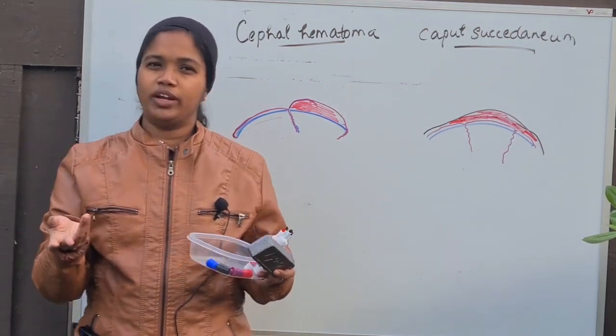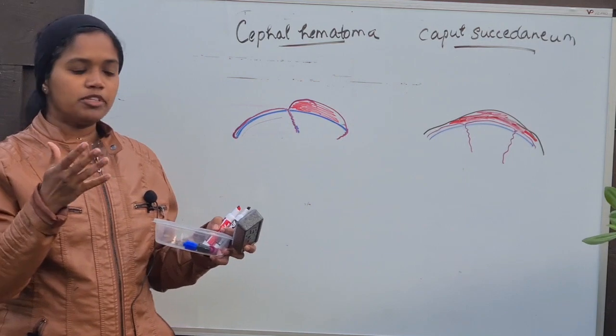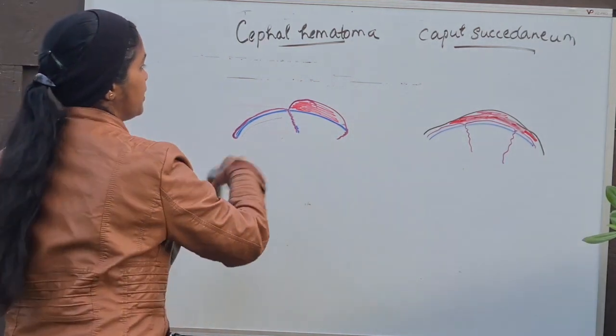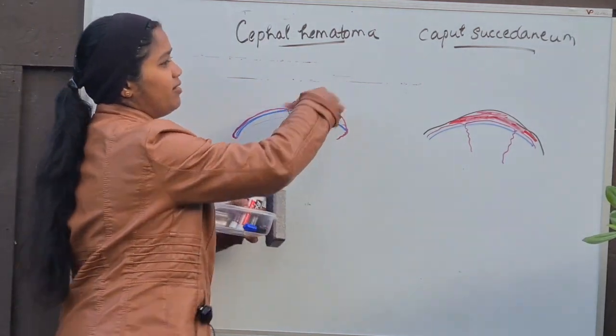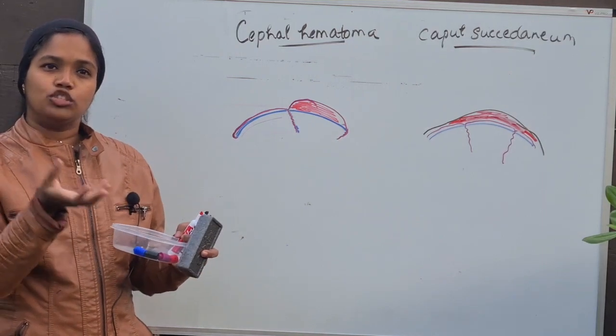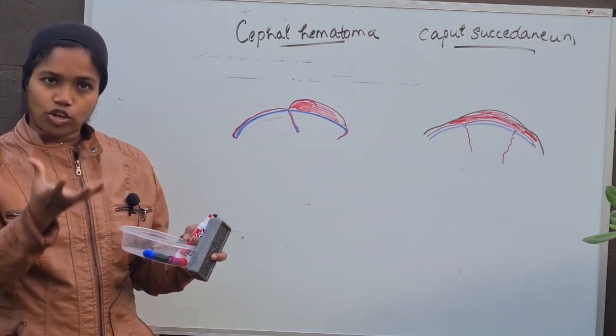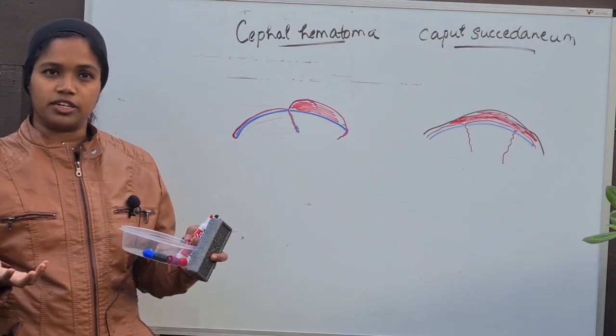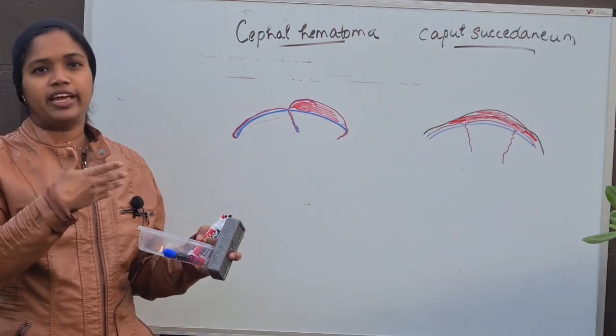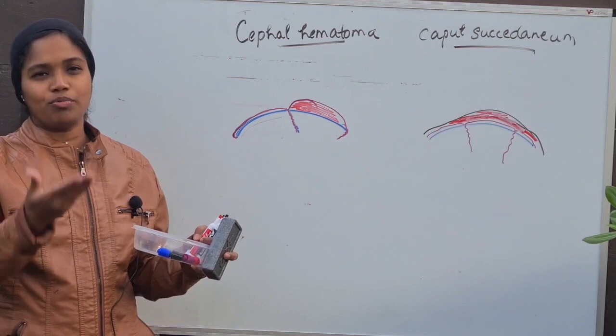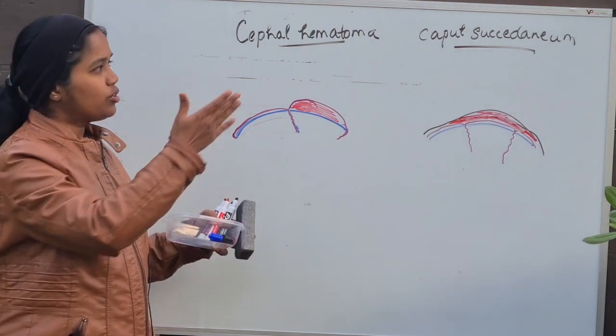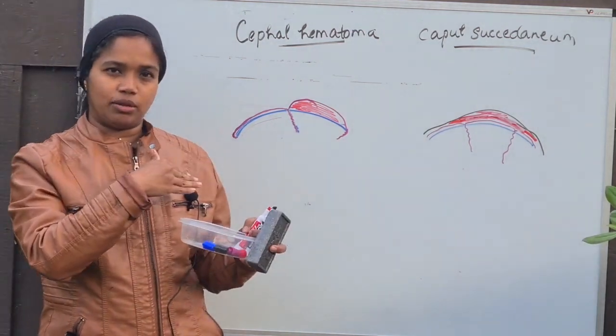Why does this happen? This happens because of instrumental delivery. Say for suction, I mean vacuum delivery. In that case, a vacuum is created to deliver the baby. Because of vacuum, either Cephal Hematoma or caput succedaneum is common. Caput succedaneum is much more common than Cephal Hematoma.